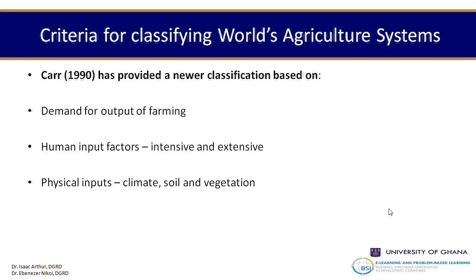Another criteria comes from CAR, 1990, which provides a newer classification based on the demand of output for farming — when one produces, people demand them. There are also human input factors, where the key thing is whether people engage in intensive or extensive farming. And then there are the fiscal inputs — how climate, soil, and vegetation within the area affect or contribute to agricultural production. Climate is a major player when it comes to agricultural production.